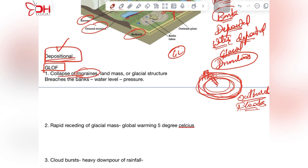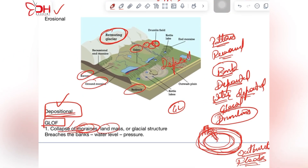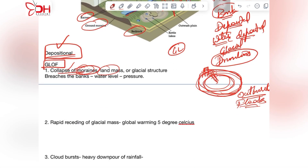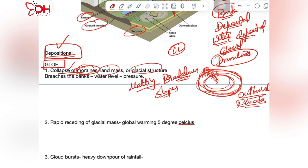The collapse of any moraines, landmass, or glacial structures — rather than melting slowly — if the glacier breaks away due to increasing temperature or discrepancies in slope, the huge mass of glacial structures falls into the lake, breaches the banks, water level increases and raises pressure on the moraine bank structures, and the result is an outburst.